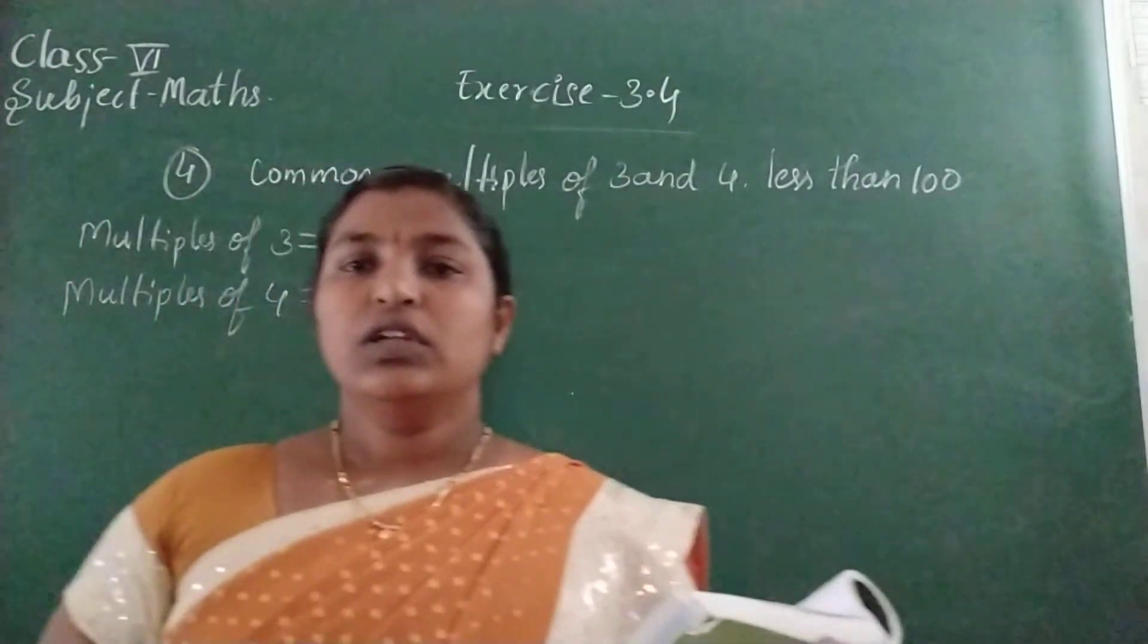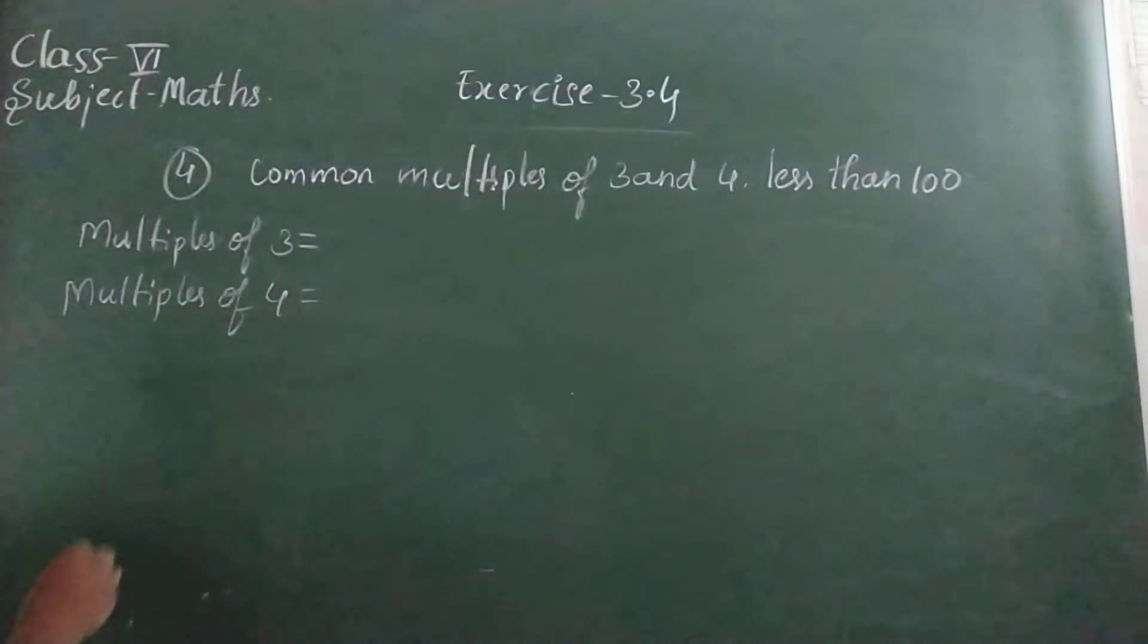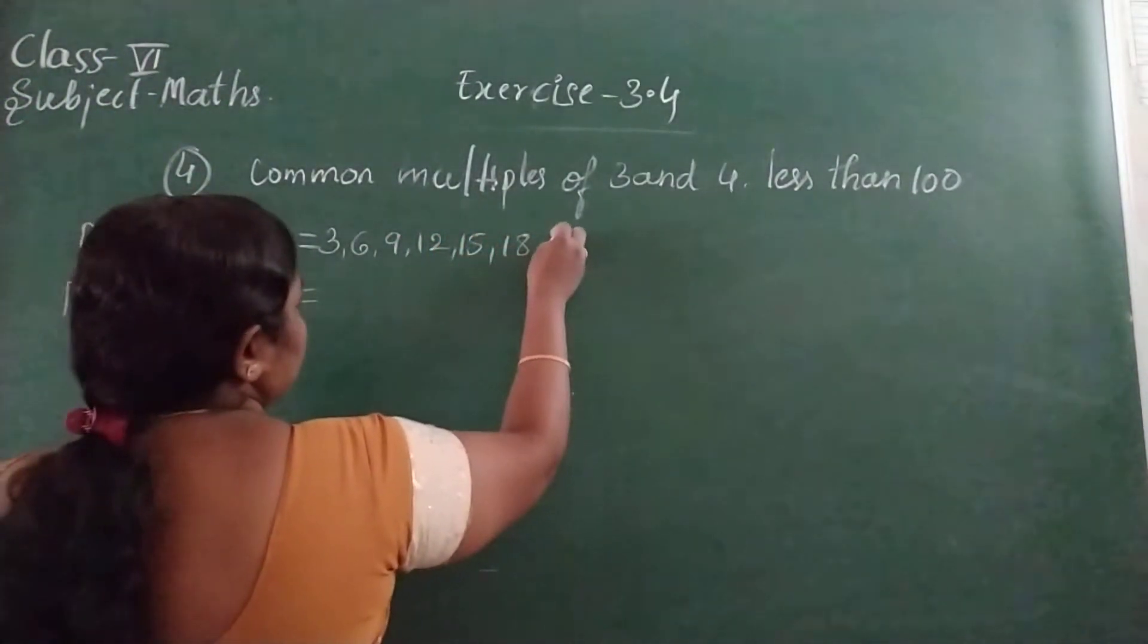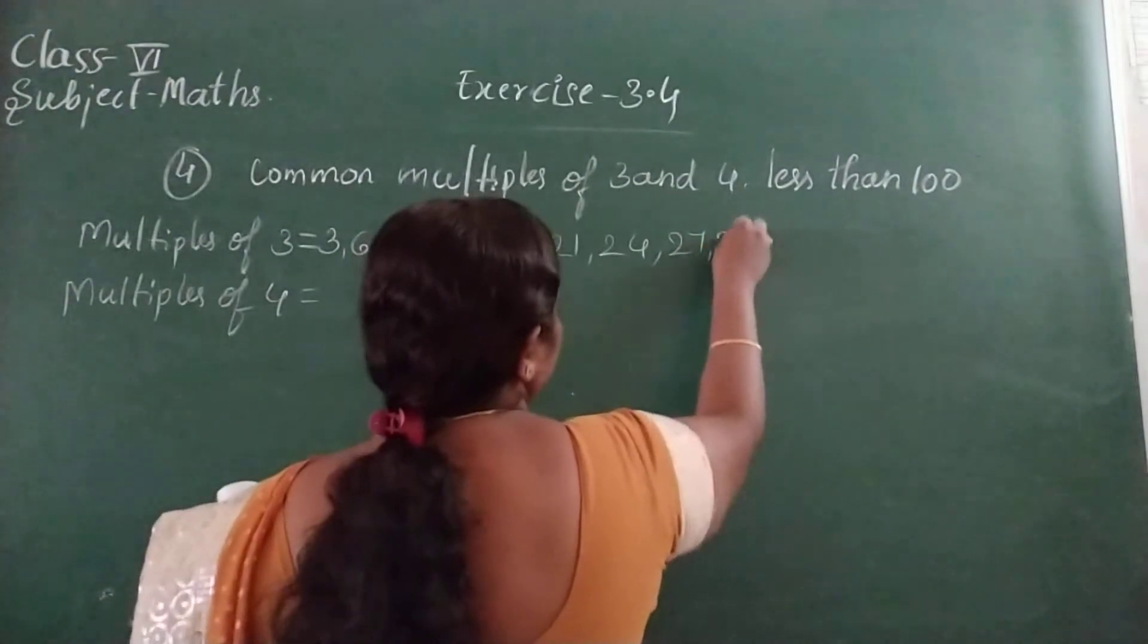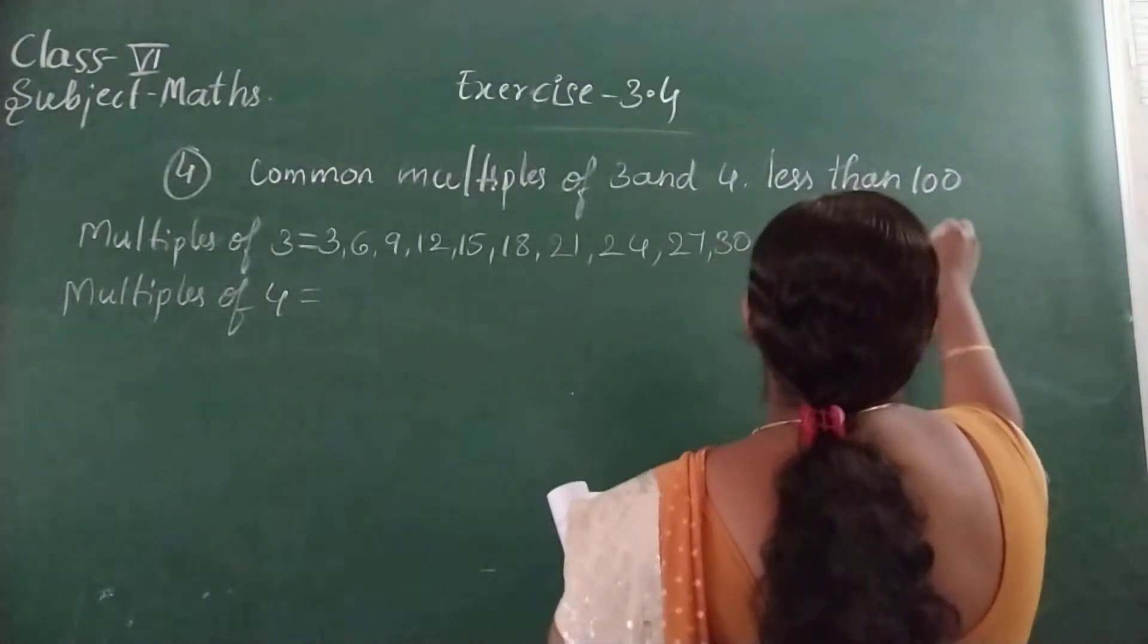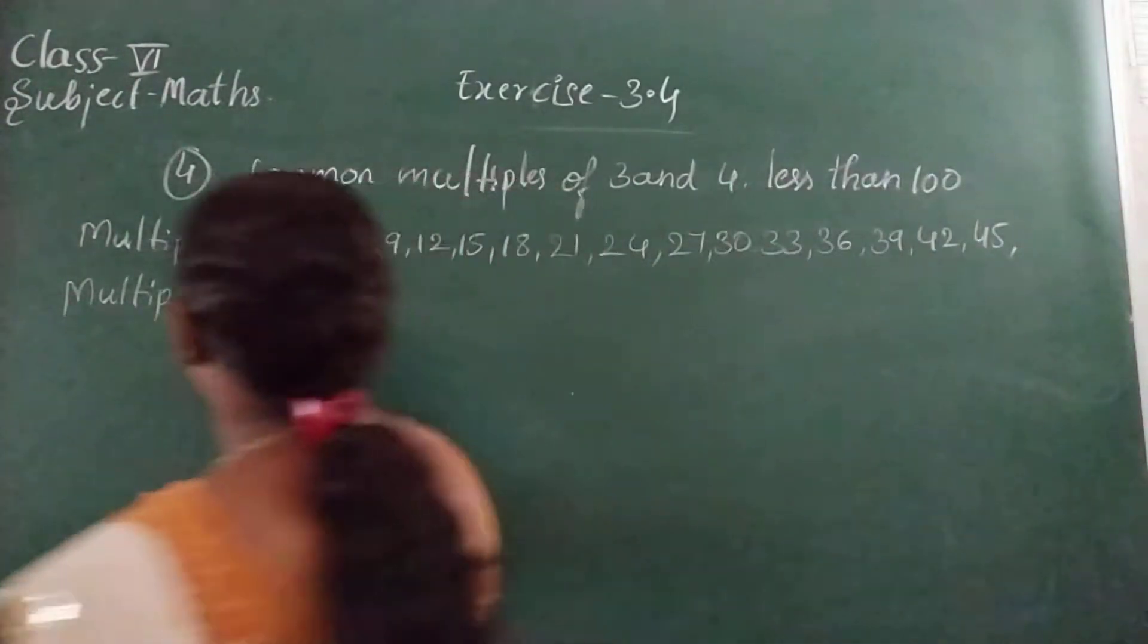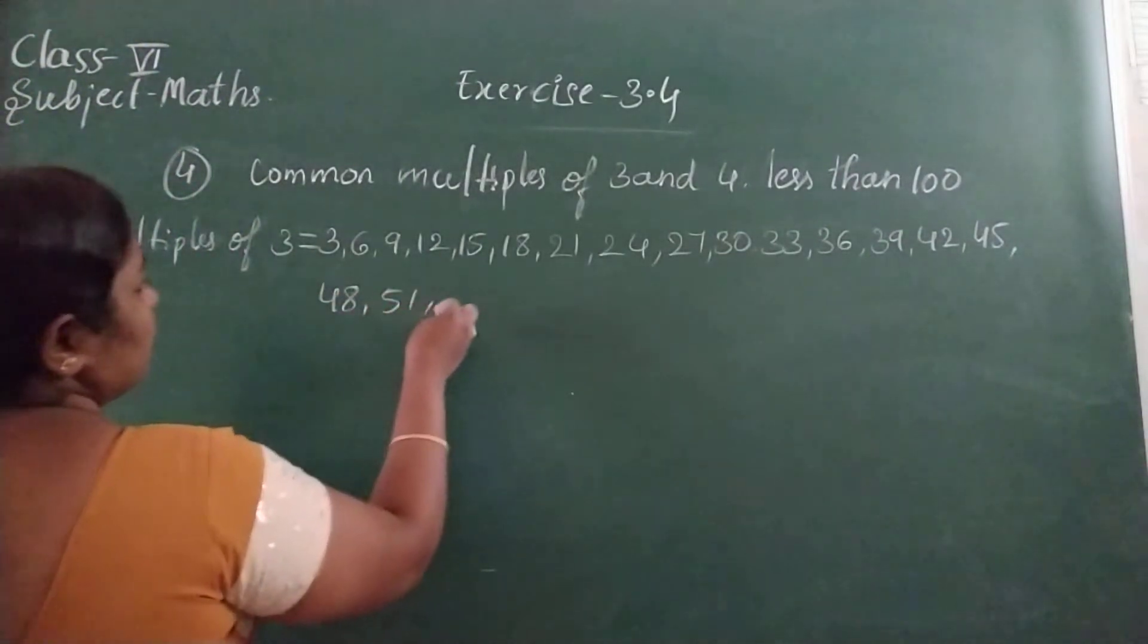So now we should list out the multiples of 3 and 4 till 100. Write the multiples of 3: 3, 6, 9, 12, 15, 18, 21, 24, 27, 30, 33, 36, 39, 42. We should write till 90, less than 100. Then 45, 48, 51, 54.